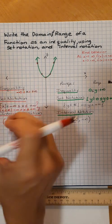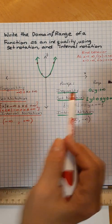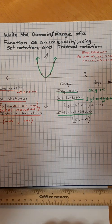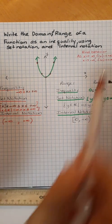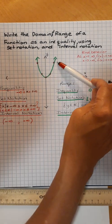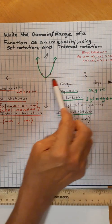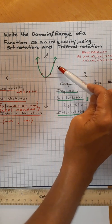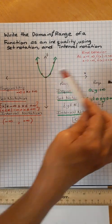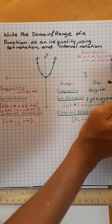That is the inequality, set notation, and interval notation for the domain and for the range. One last thing is end behavior — end behavior is what the heck is your graph doing? When x is going in a direction, what's y doing? We say y is f(x). So when x is going to positive infinity, what's happening to my y's? They're going up, and they're not going to stop because there's an arrow. So as x gets larger and goes to infinity, f(x) is also going to positive infinity.